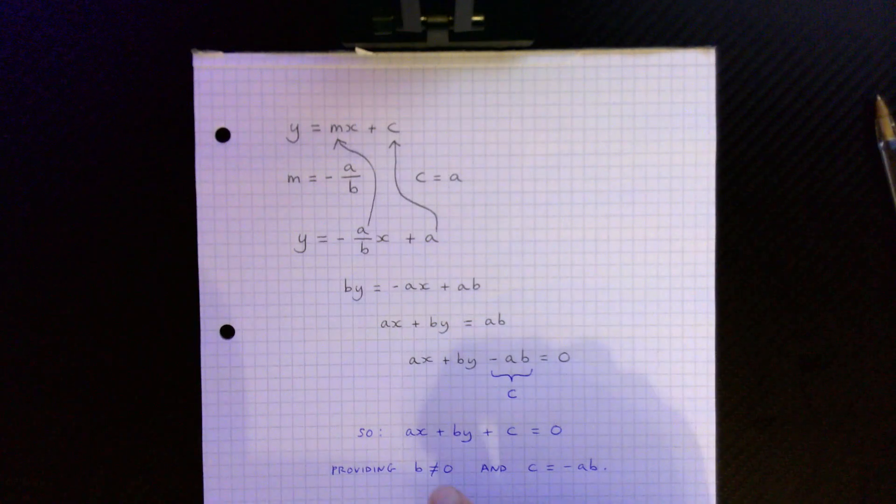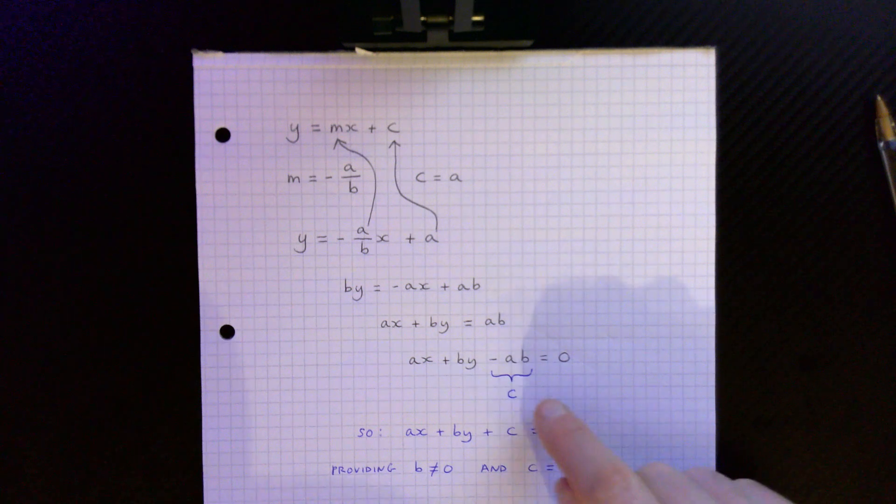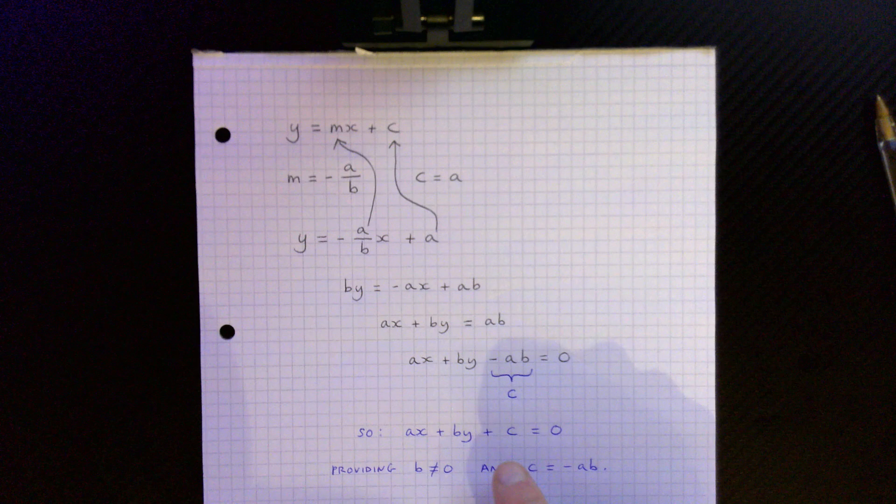Okay so where does ax plus by plus c is equal to zero come from? Well c is basically equal to minus ab. Okay so that's why you get this.